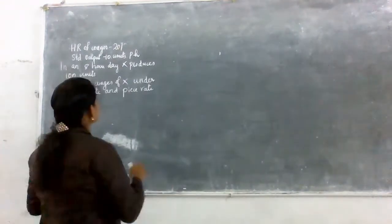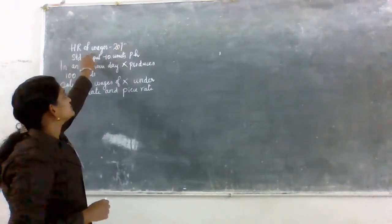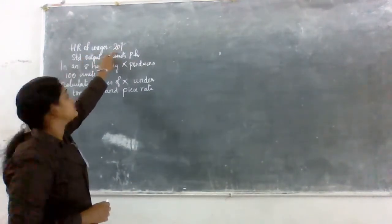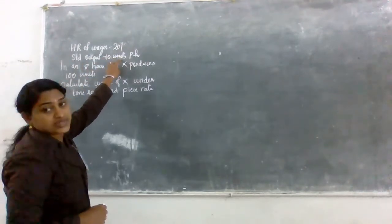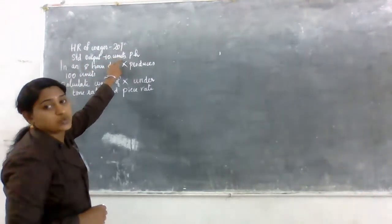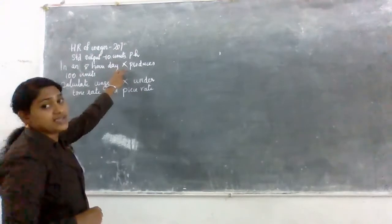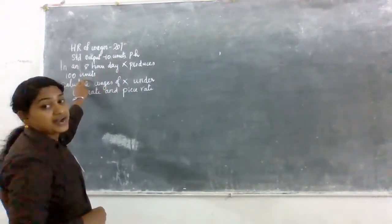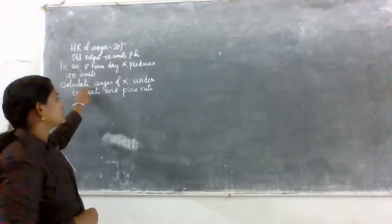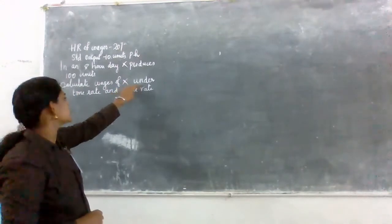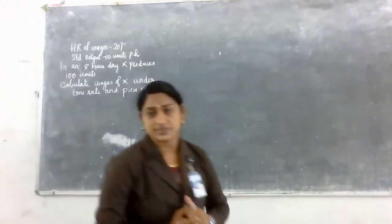In this problem, the hourly rate of wages is 20, standard output is 10 units per hour in an 8-hour day. Worker X produces 100 units. Calculate the wages of X under time rate and piece rate system.